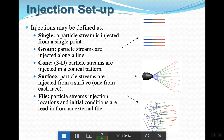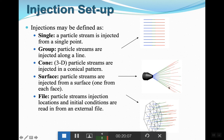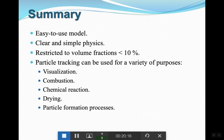Surface injection injects particle streams from a surface — from the center of every single cell, one stream of particles is injected. This is very useful when you want homogeneous injection from the entire surface of your geometry. Finally, file injection allows you to define different injection points at various coordinates in a text file, including velocities and mass flow rates, and attach it directly to ANSYS — making it a mixture of all injection types.